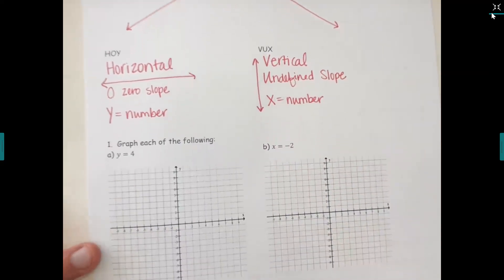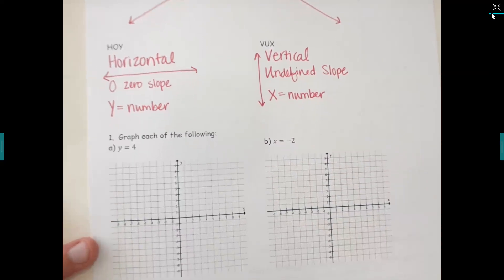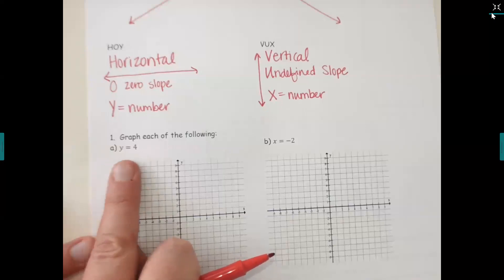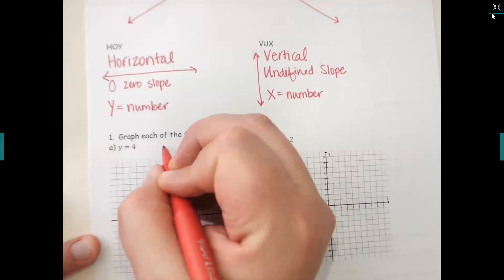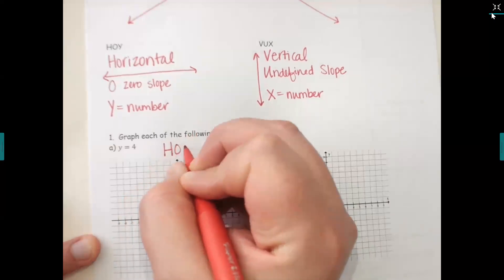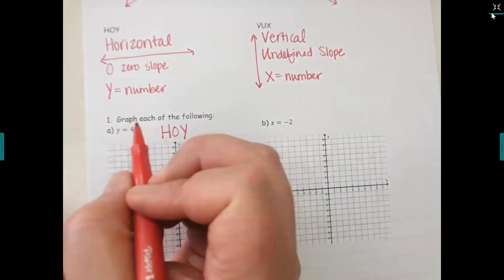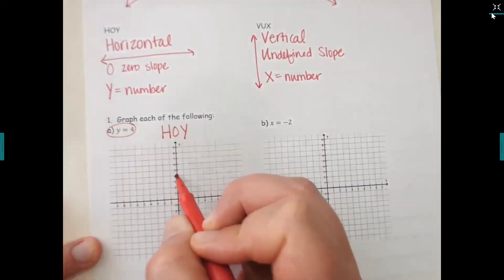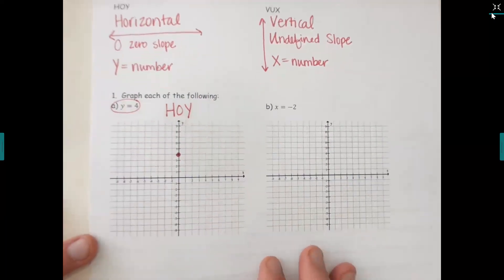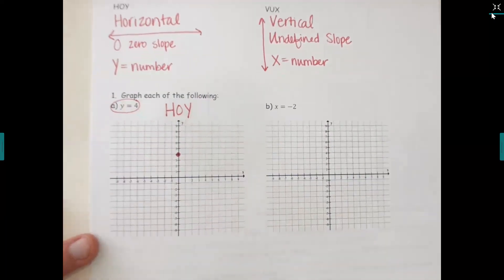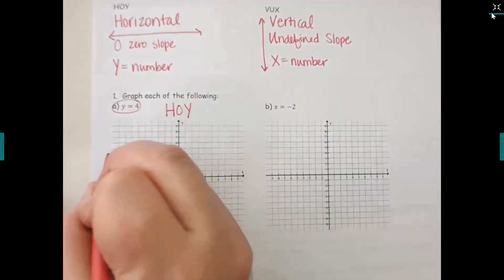You can tell if it's a HOY or a VUX based on the letter they use in the equation. For a HOY, you go on the y-axis to that number and draw a horizontal line through it. So y equals four would be right here, and you just cut the line across horizontally like that.